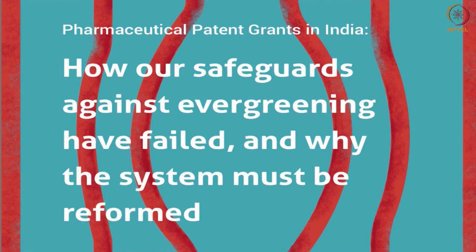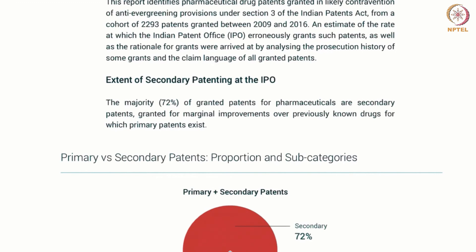This is the report. The report is titled 'Pharmaceutical Patent Grants in India: How Our Safeguards Against Evergreening Have Failed and Why the System Must Be Reformed.' We show that the extent of secondary patenting at the IPO is much higher than what was anticipated — 72 percent of the granted patents pertain to secondary patents.